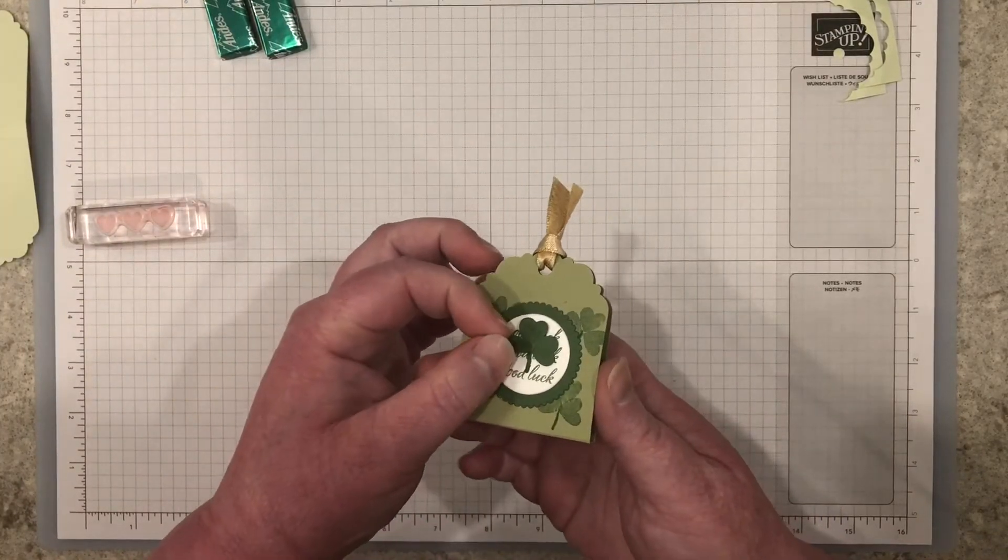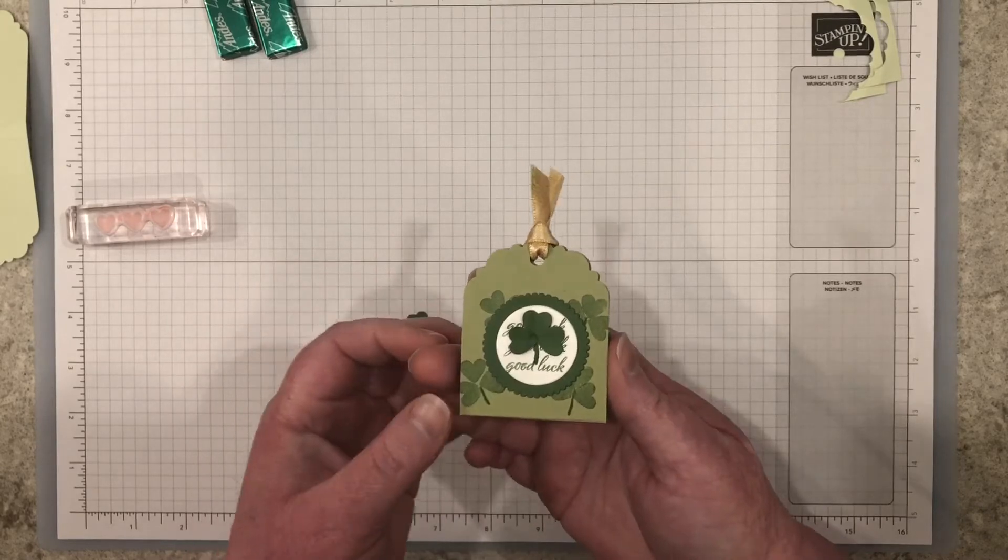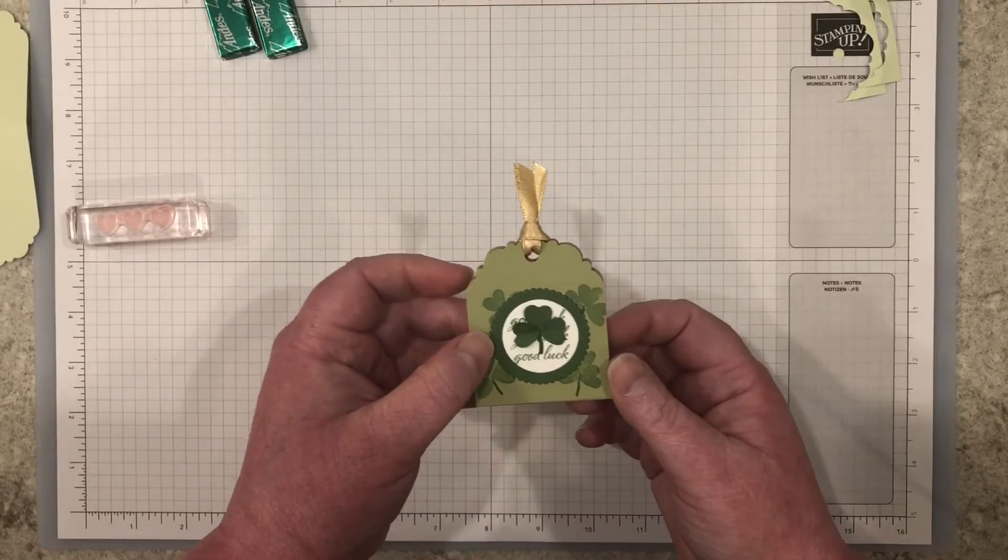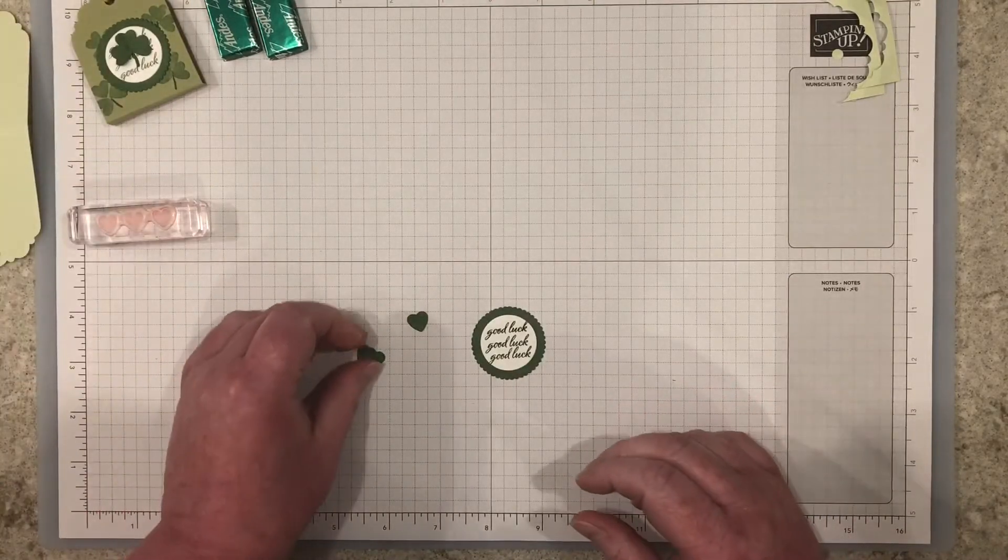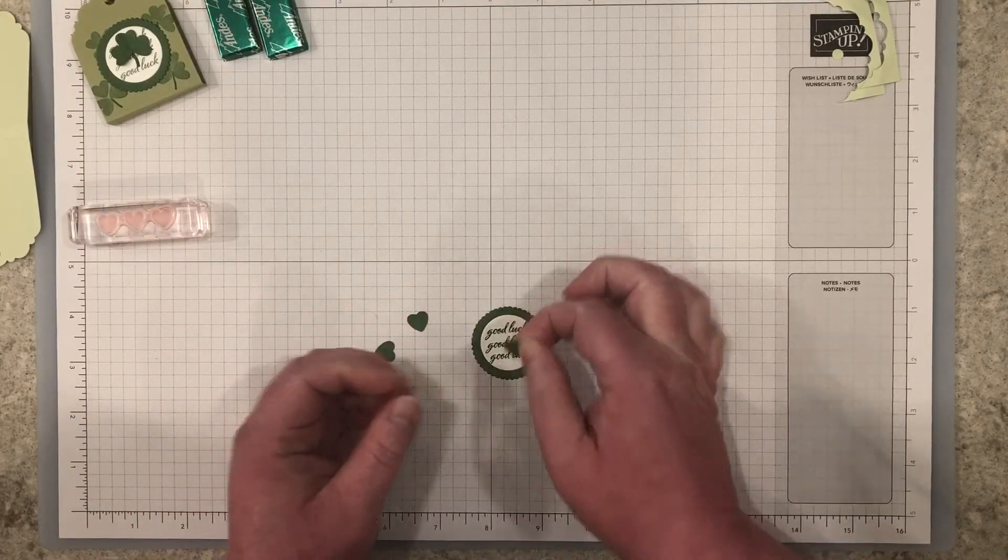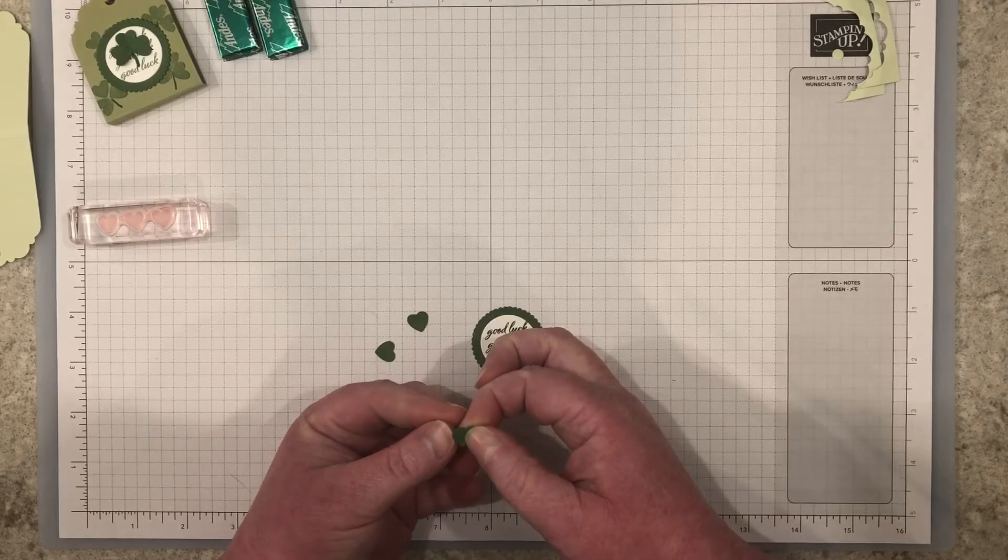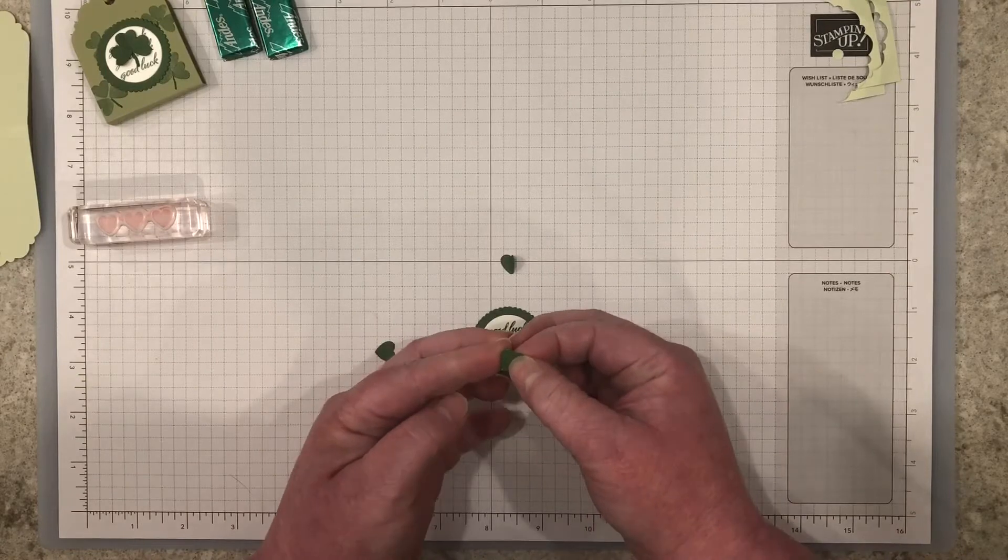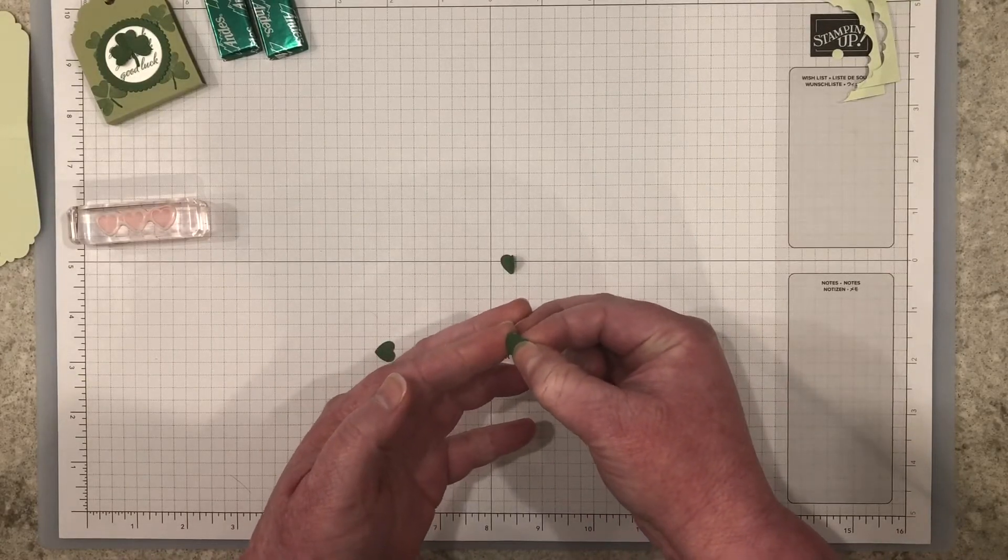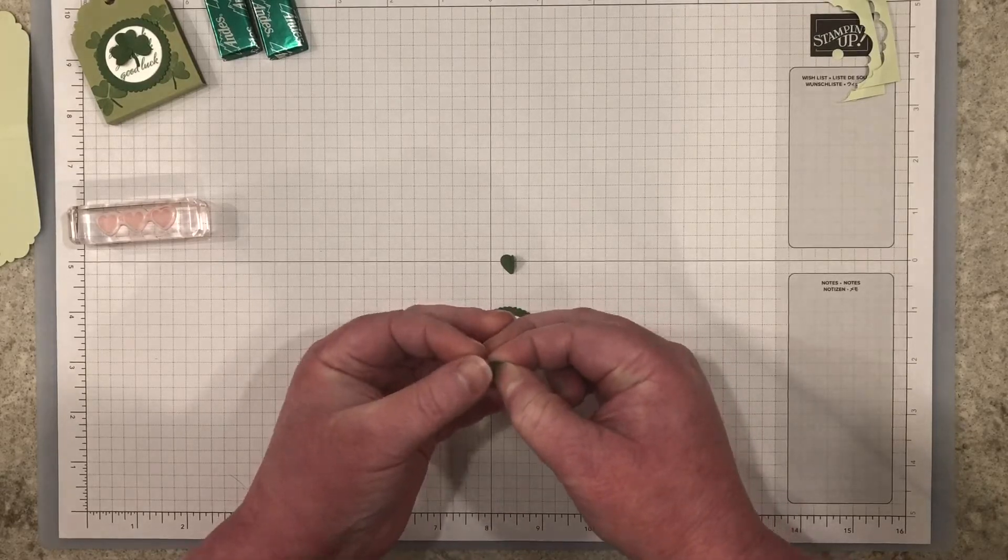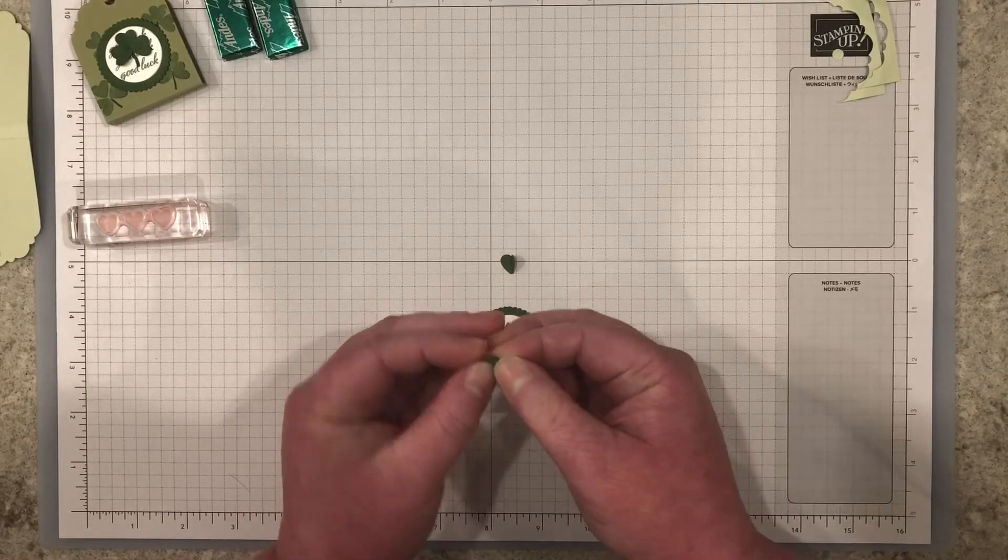On my sample, I folded each of the leaves of the shamrock to give the treat holder a little more depth. This is an optional step if you would like to. You can fold the leaves of your shamrock or you can glue them straight down to the cardstock. I bent each of the hearts in half. I just placed my thumb where I wanted to score it and brought the other side up and then finish the fold in half.